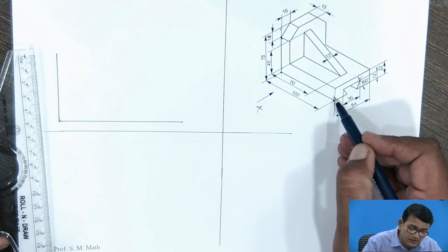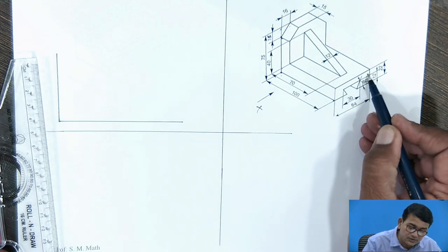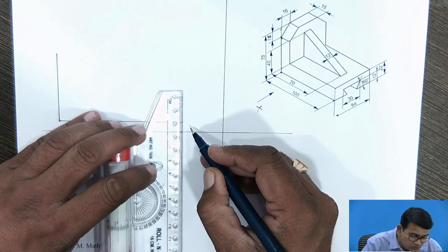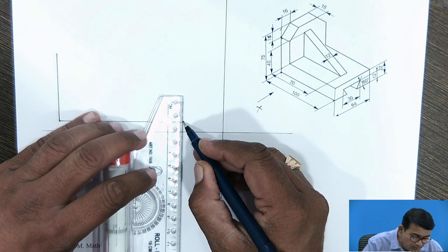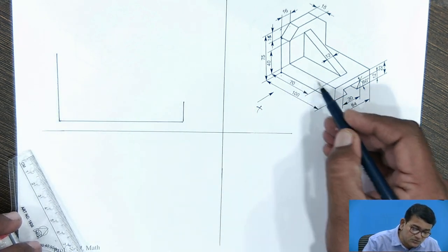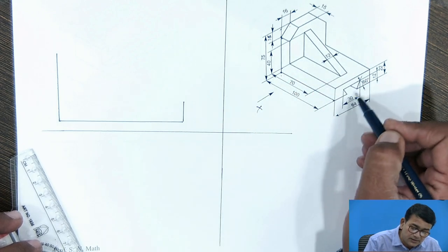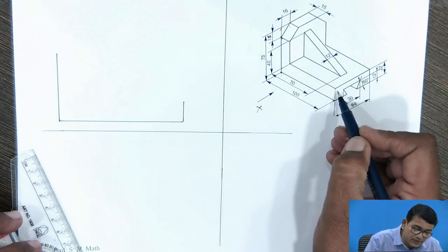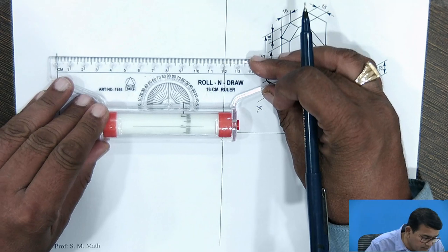What is the vertical height of this portion? It is given as 22 mm, so travel 22 mm. This end is again 22 mm, but the slab width is 15 mm, so travel 15 mm.